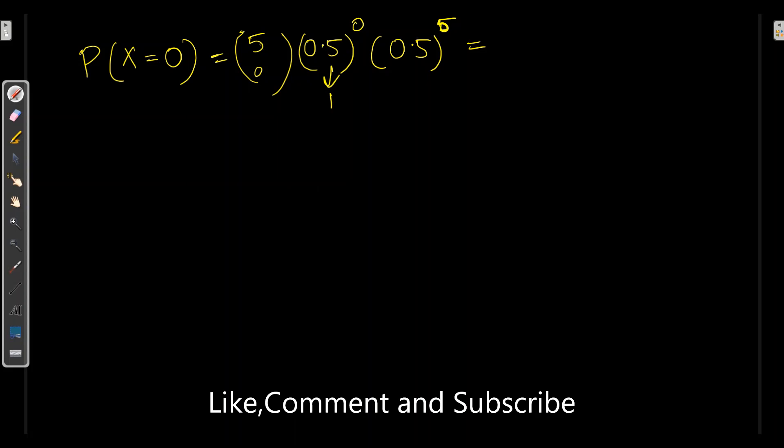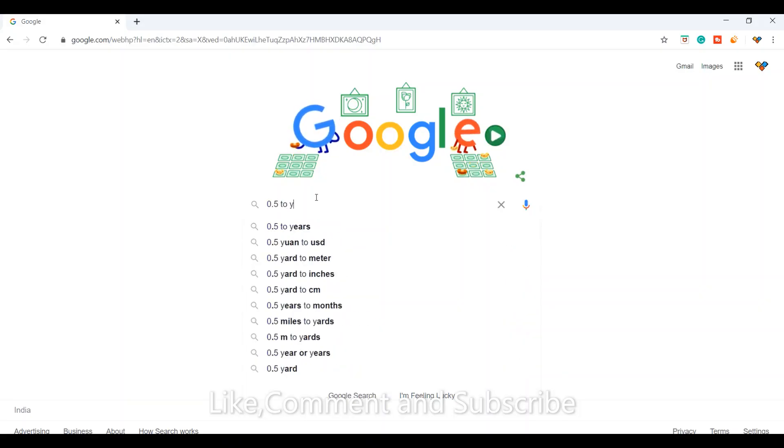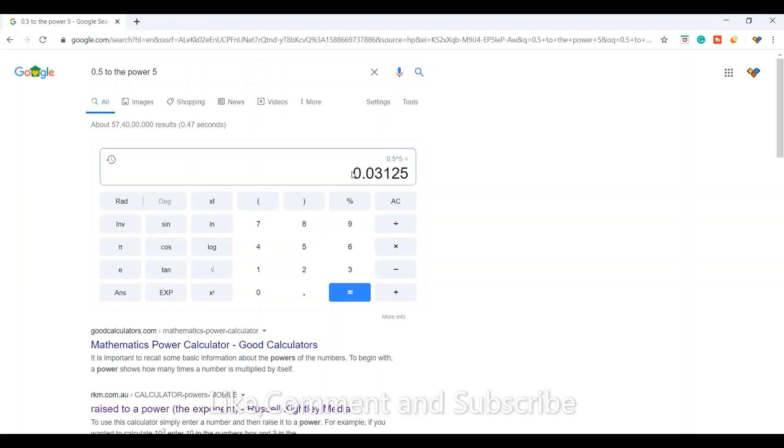Now let's take when we want probability of getting head 0 times. So I can write P of X is equal to 0. So we will have 5 choose 0. Probability of getting head will be 0.5 to the power 0. And probability of failure 0.5 to the 5 minus 0 will be 5. So if I calculate this, this is equal to 1. And 5 choose 0 will be 1. So here we need to calculate 0.5 to the power 5, which is 0.03125.